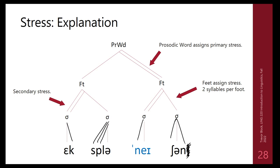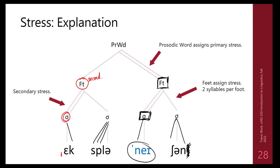For 'explanation': the foot containing 'nay' connects to the prosodic word with a double line, giving 'nay' primary stress (left side of that foot). The foot containing 'ek' is not doubly linked, so 'ek' gets secondary stress. The result is 'ex-pla-NAY-tion' — primary on 'nay', secondary on 'ek'. You can manipulate: how many syllables per foot (standard is two), which side of the foot gets stress, and which side of the prosodic word gets primary stress.